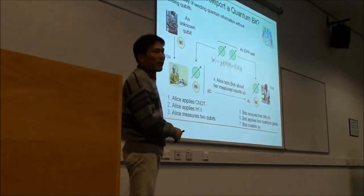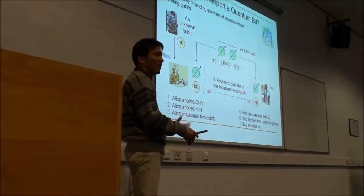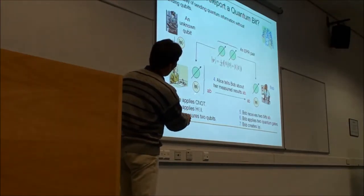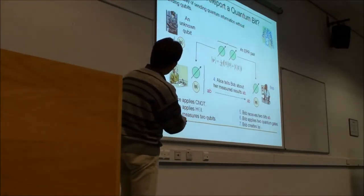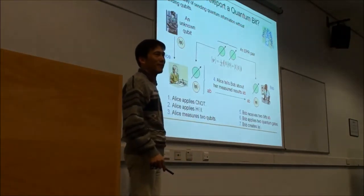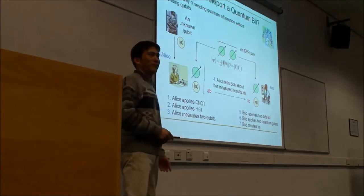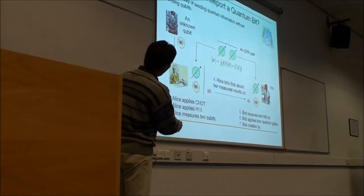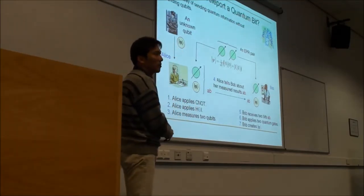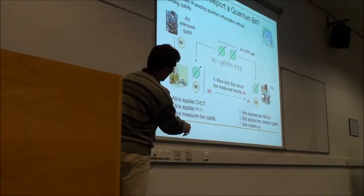Now someone gives a quantum bit to Alice. Alice can't see it, because if she does, it collapses to just 0 or 1 and the nice quantum property is gone. Alice wants to send this information to Bob without actually sending the particle. The first step: Alice applies CNOT to these two qubits, one from the unknown state. Then she applies the Hadamard gate and identity gate, and then measures two qubits, which collapse to either 00, 01, 10, or 11 with equal probability.